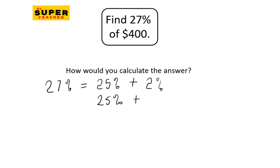2% is two times 1%, and 1% equals 400 over 100, which is $4. Now, 25% is a quarter, so that's 400 divided by 4, which equals $100.